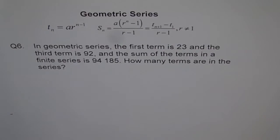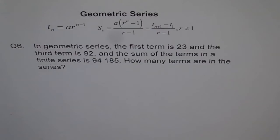Question 6. In a geometric series, the first term is 23 and the third term is 92, and the sum of the terms in a finite series is 94,185. How many terms are in the series?